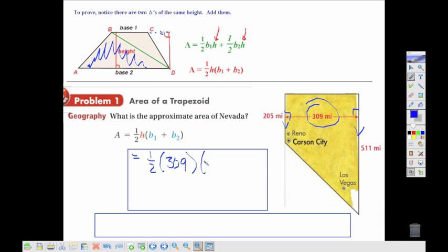And then our bases would be the 205, and we'll add that to the 511. And that would come to 110,622, and so we would write that as square miles.